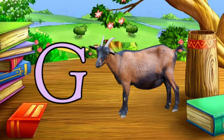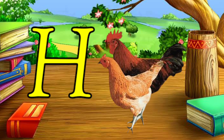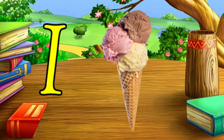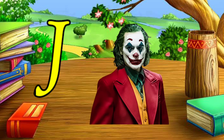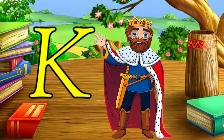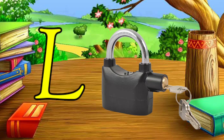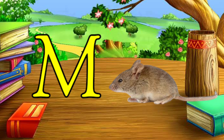G for goat, H for hand, I for ice cream, J for jogger, K for king, L for lock, M for mouse.